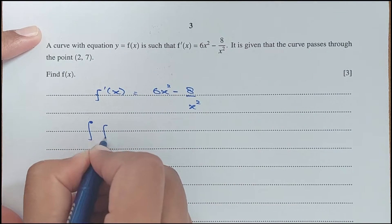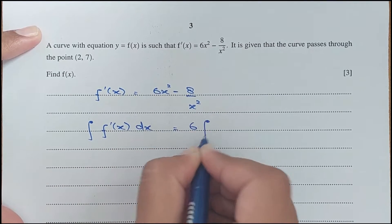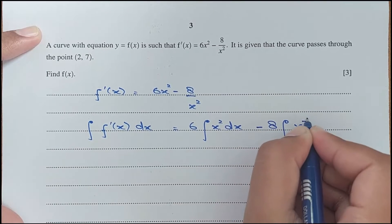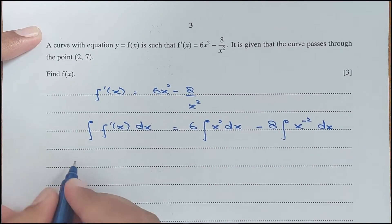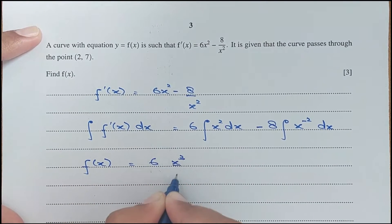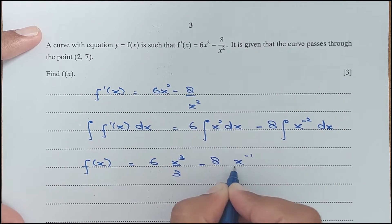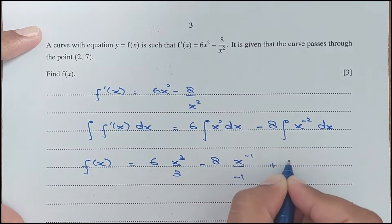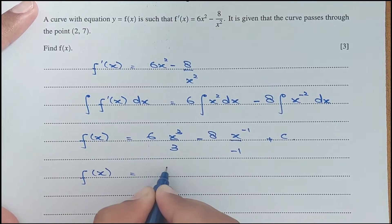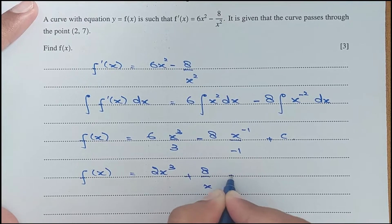So integration of f'(x) dx: 6 is outside the integration of x² dx, minus 8 is outside the integration of x⁻² dx. So here we will get f(x), which is 6x³ over 3 minus 8x^(−2+1) over (−1) plus some constant of integration.